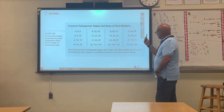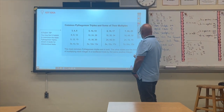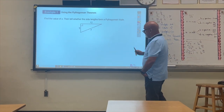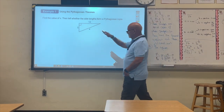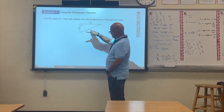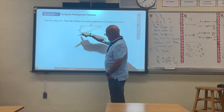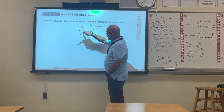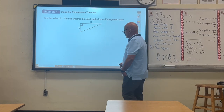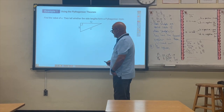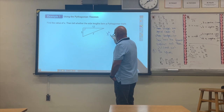Let's see some examples about identifying Pythagorean triples. In this case, we have a right triangle with the hypotenuse equal to x. One leg — the shortest — is 5, and the long side is 12. We need to find the value of x. Since x is the hypotenuse, applying the Pythagorean theorem: x squared equals 5 squared plus 12 squared.